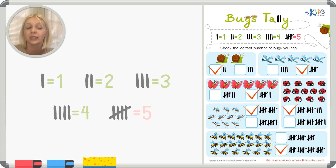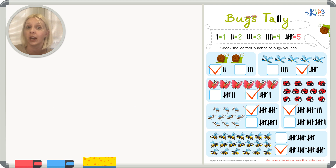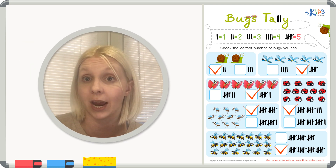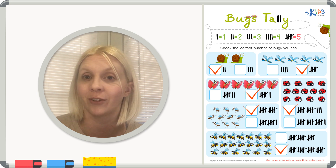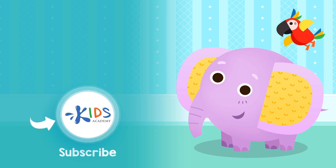That's how we keep track of data — information, numbers — in this case our bugs, using tally marks. Tally marks help us visually and quickly see groups of five, then count by fives and add on. Great job today working with your tally marks! I'll see you guys next time. Subscribe to our channel to stay updated on new videos, and find links to our apps in the comments below. Bye-bye, friends!